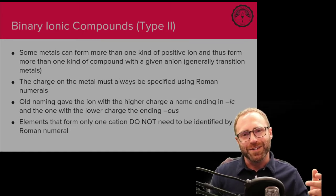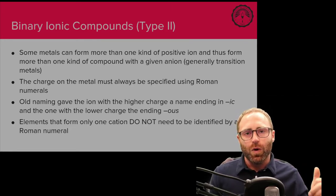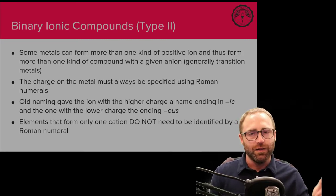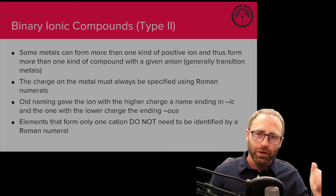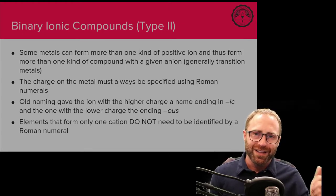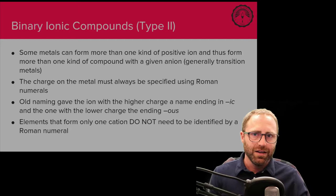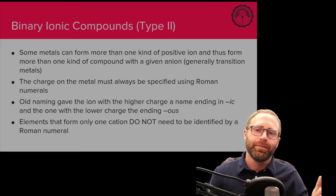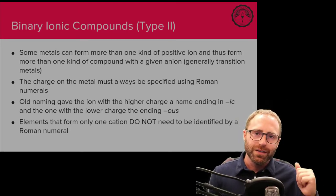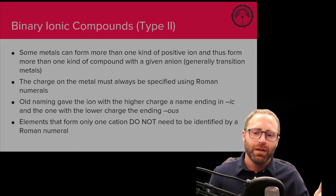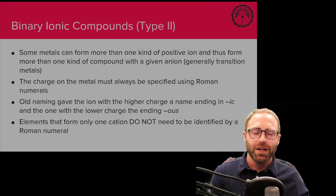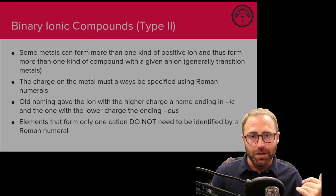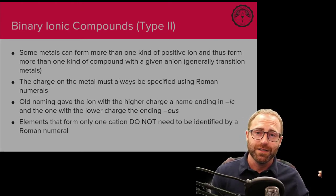Remember our three exceptions — aluminum, boron, and silver — the reason they are exceptions is that silver will always be in a +1 state, aluminum will always be in a +3 state, and boron will also always be in a +3 state. They never change their charge, so you don't need Roman numerals for them.